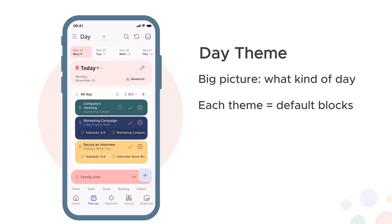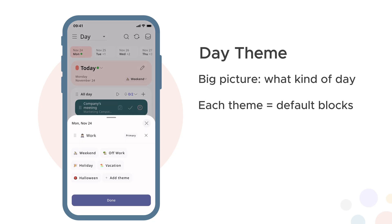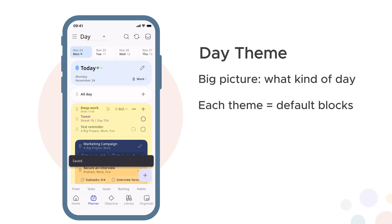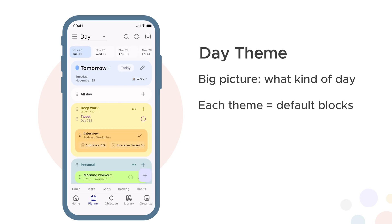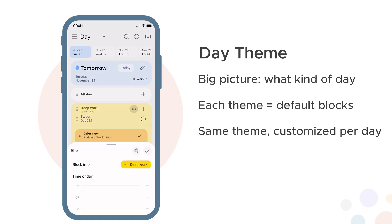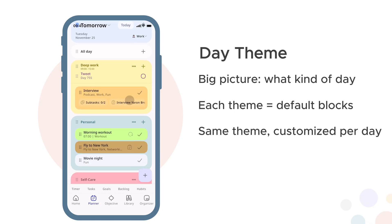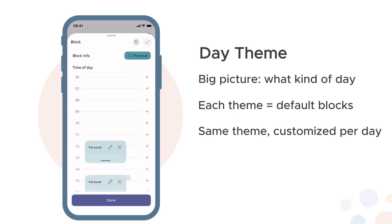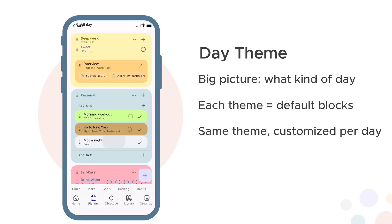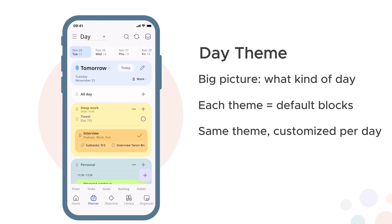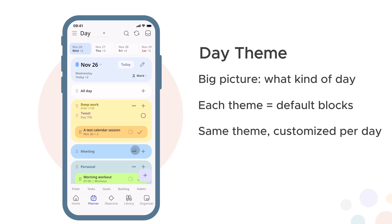Time blocks provide the actual structure within your day — deep work, meetings, personal, morning routine. Each block is a container where related sessions land. But remember, these blocks are flexible. You can give them specific time ranges when you know the schedule, leave them unscheduled when you don't, split them into multiple time ranges when your day requires it, or remove blocks you don't need today.